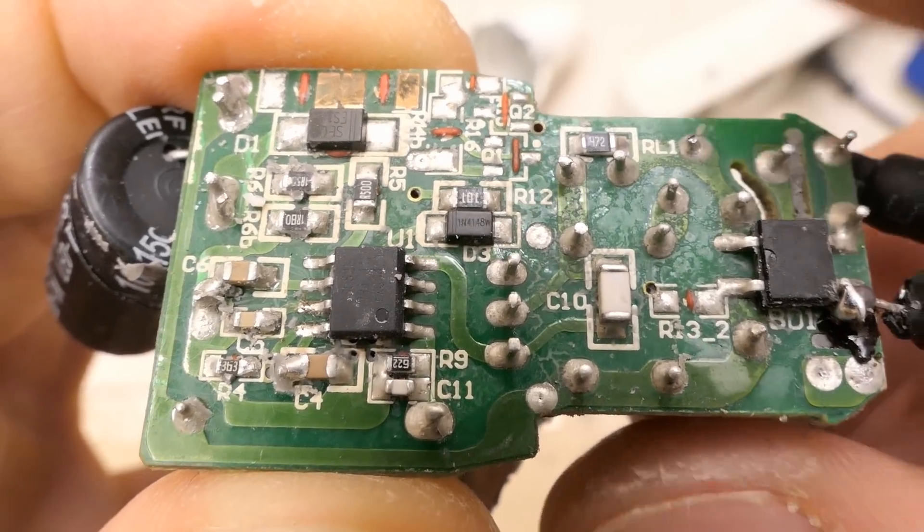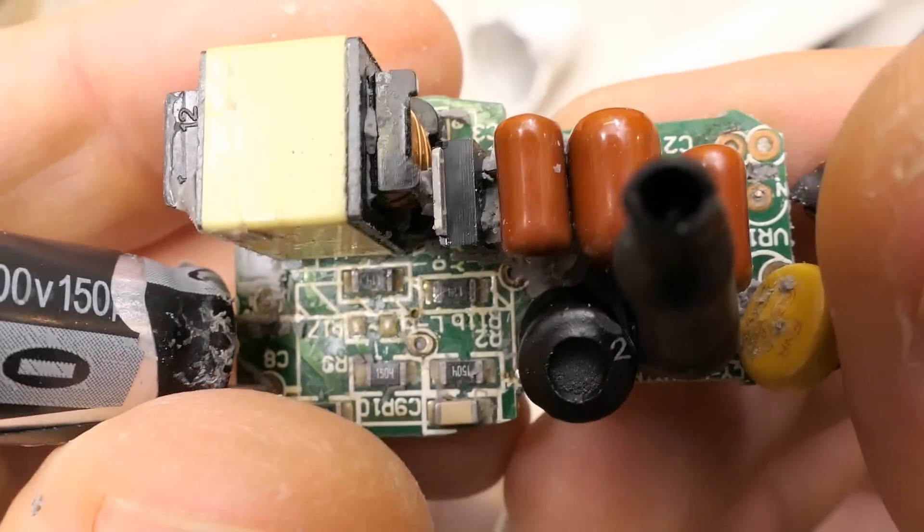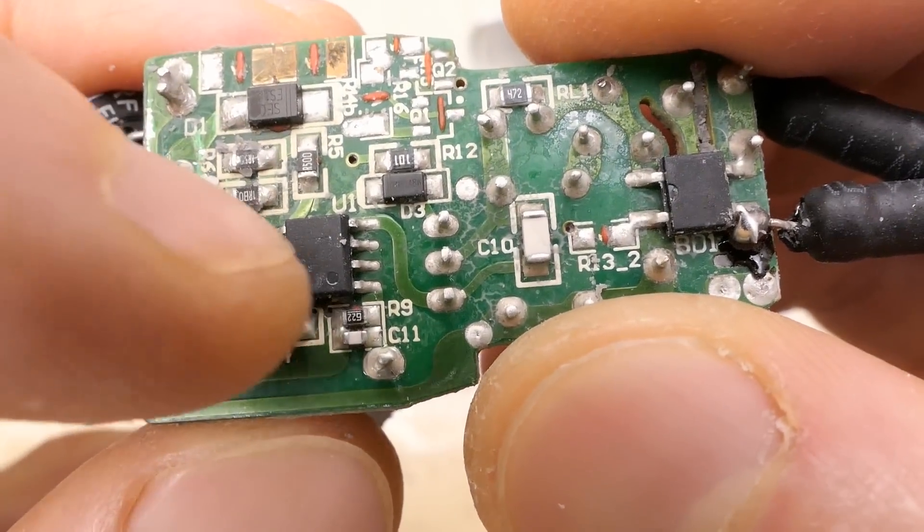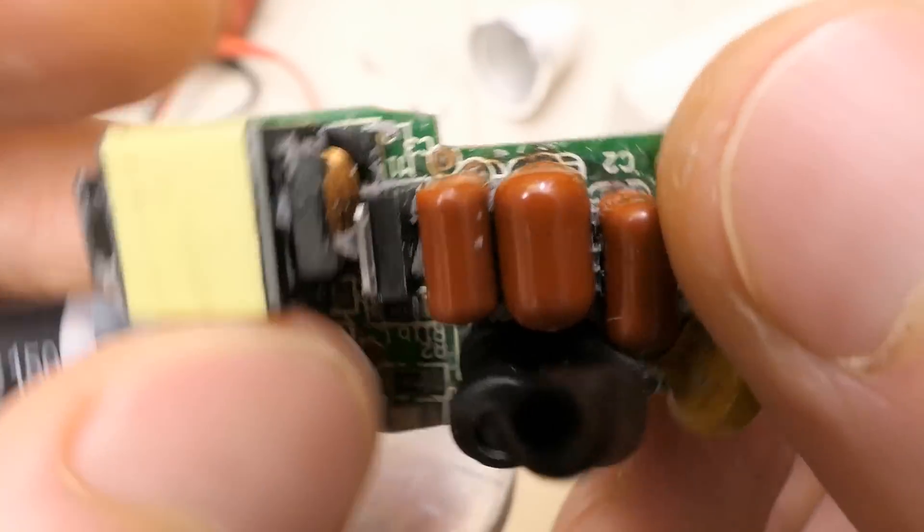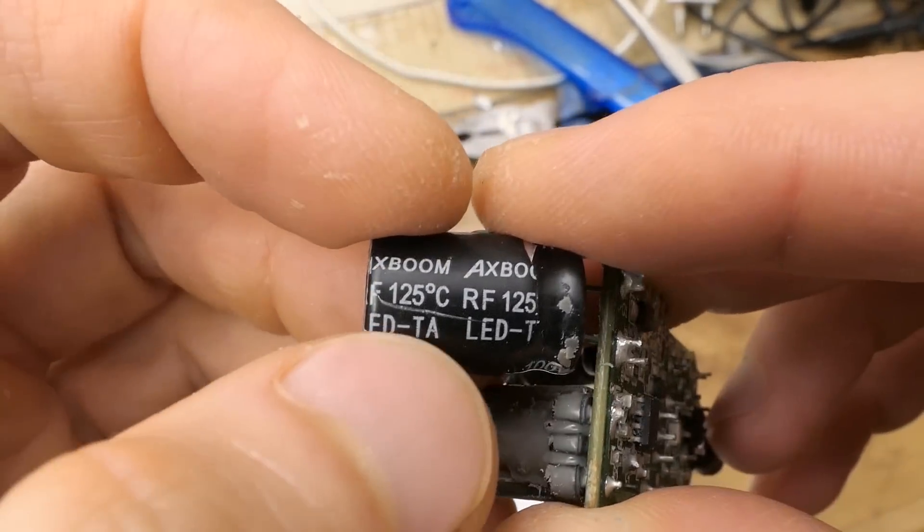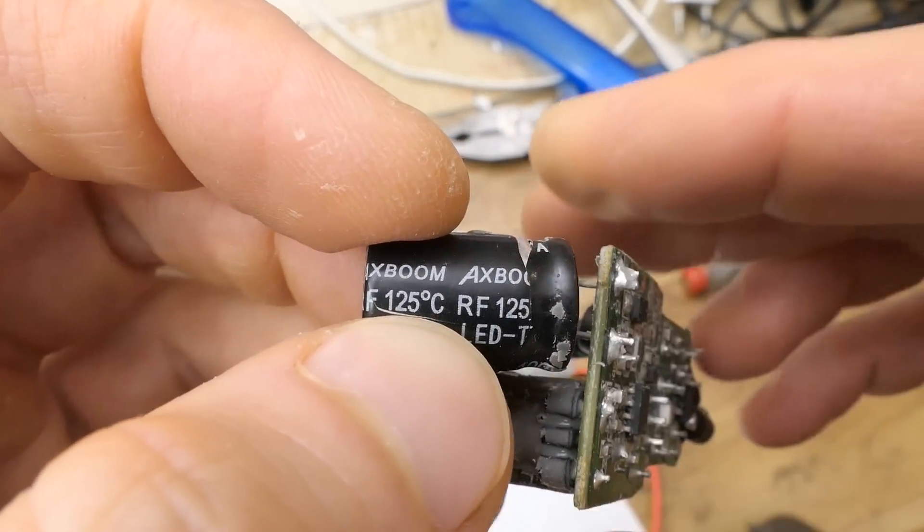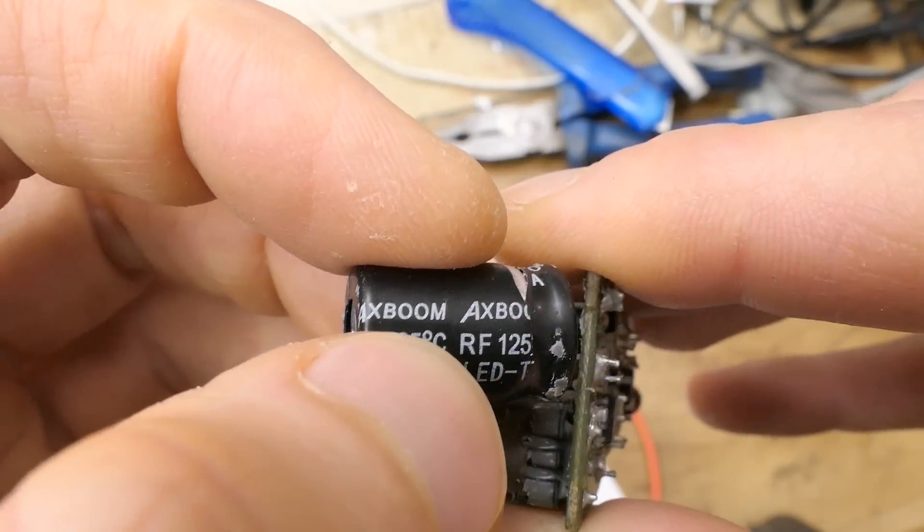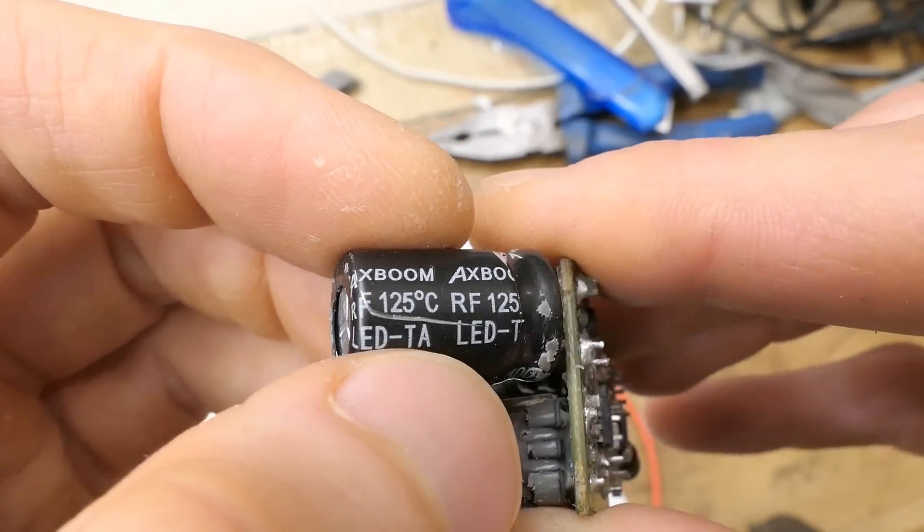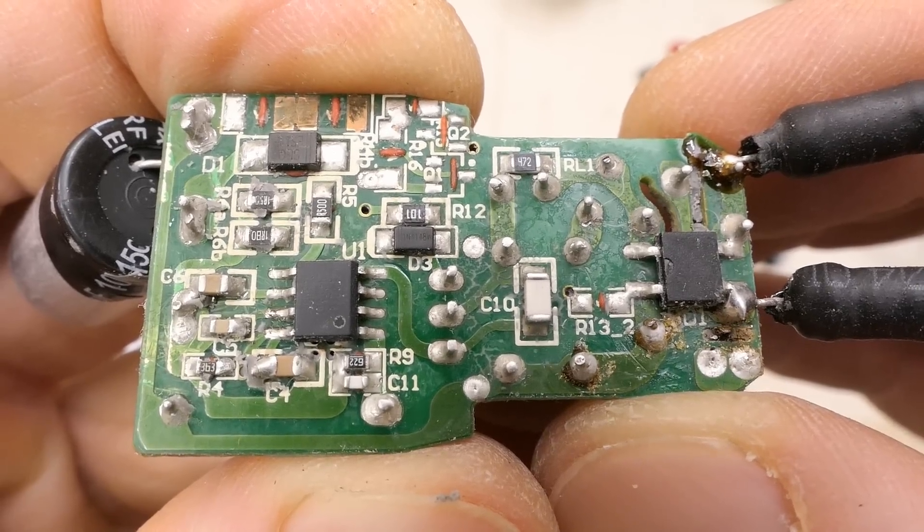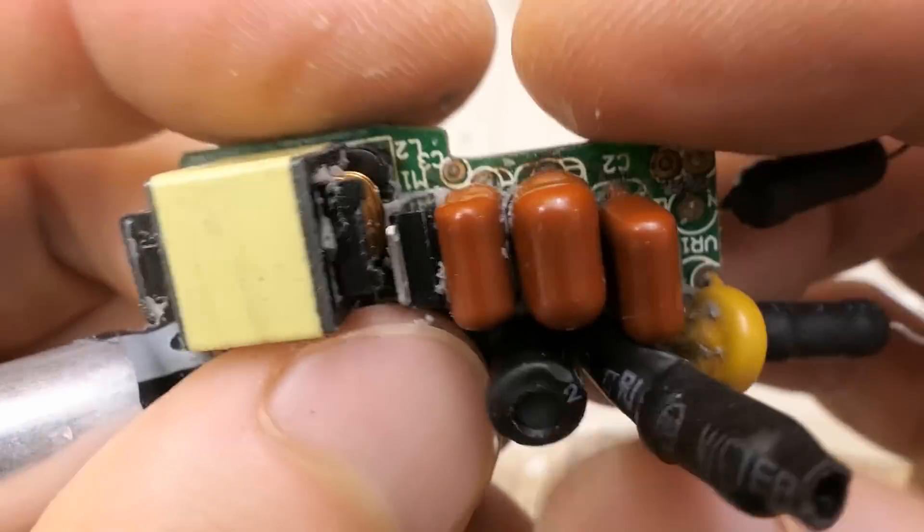Here's the board and it seems to be using a discrete transistor here. A lot of LED lamps are using a chip with a built-in high voltage switching transistor but this one has an external transistor. And of course the LED wires just fell off and a 125 degree Celsius electrolytic capacitor. XBOOM LED TA. Interesting capacitor. This is not easy to reverse engineer. I will probably have to destroy it in the process.